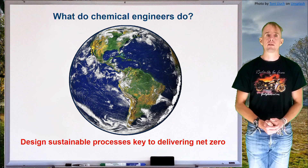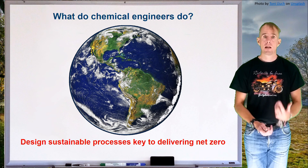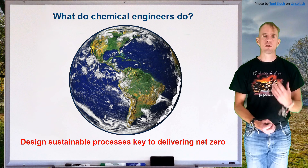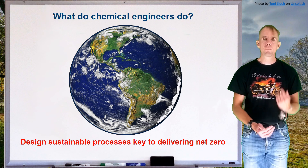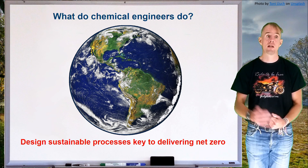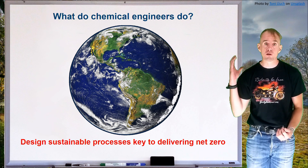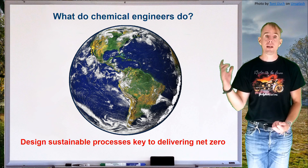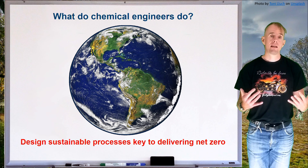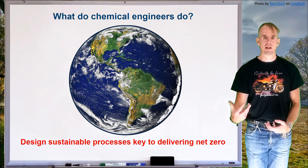Finally, in terms of length scales, chemical engineers have to worry about one of the biggest length scales there is: the planet. How do we design processes that deliver good environmental performance? How do we achieve net zero as a planet? It's going to be in part through very good chemical engineering. How do we remove the pollution we've spread around the planet? It will be through good recycling, which needs good chemical engineering analysis to be effective. In summary, chemical engineers worry about everything from molecular scale to global scale.